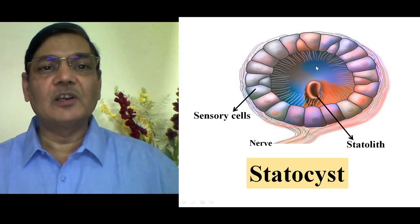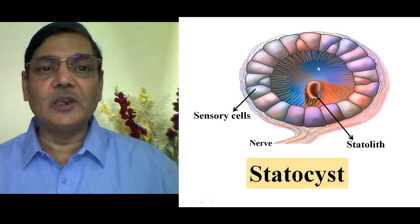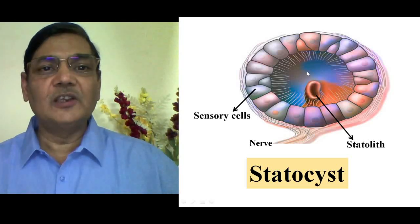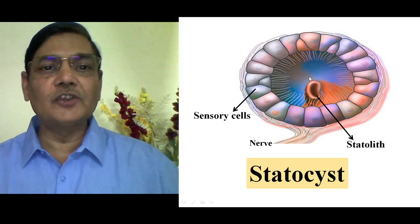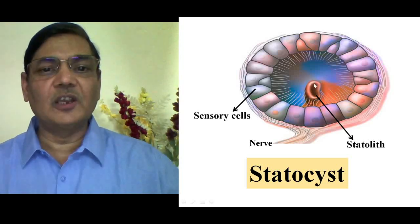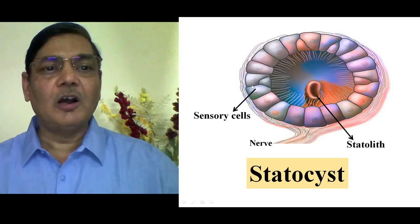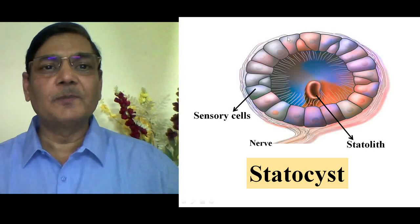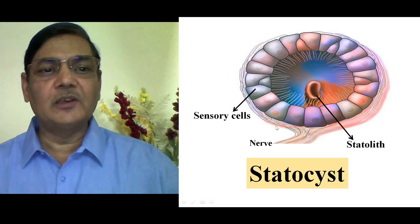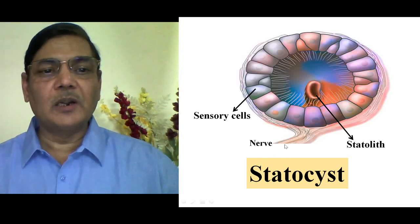You can consider this fluid as an endolymph. And inside this endolymph, a solid, calcium carbonate-rich structure is present. This structure is called the Statolith. All these individual sensory cells are innervated by fine nerves, which unite and make a single nerve.